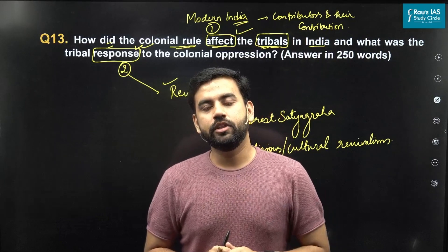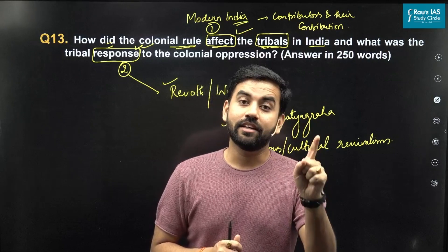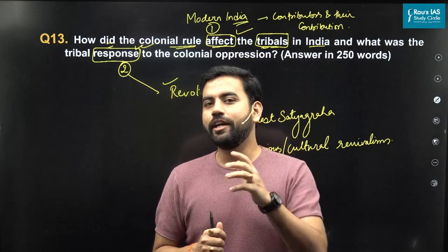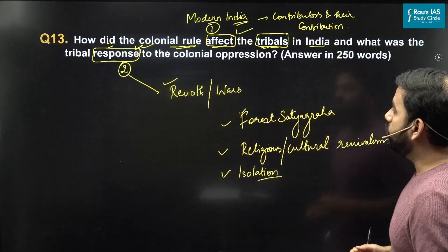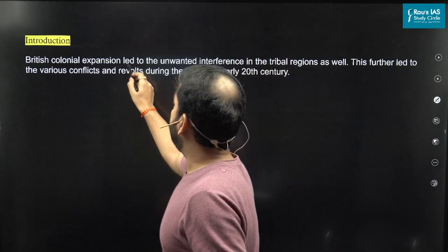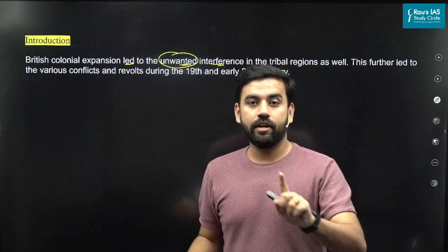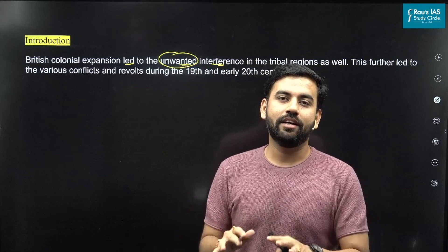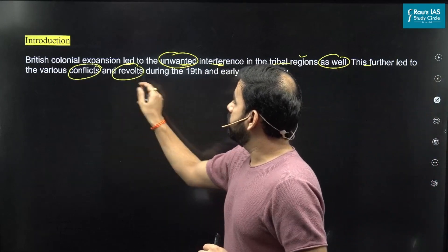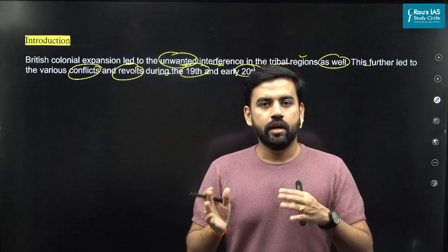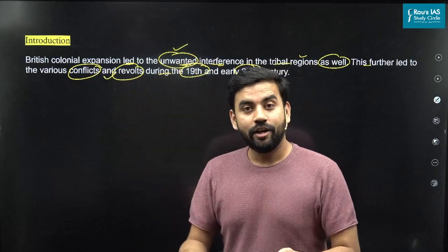In his Tribal Panchsheel, Jawaharlal Nehru, our first prime minister, used the policy of non-interference and respecting the cultural and social rights of the tribals. This was learned from the experience gained during the freedom struggle. For the introduction, you can write: British colonial expansion led to unwanted interference — no tribe ever invited the Britishers to intervene in their social and cultural life — which further led to various conflicts and revolts during the 19th and 20th centuries before independence.